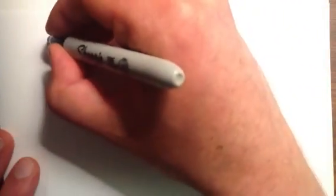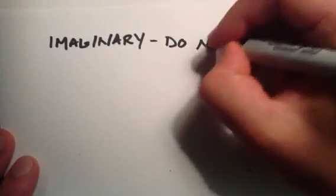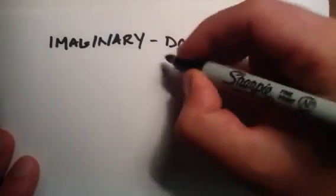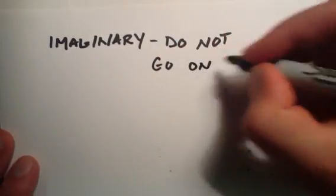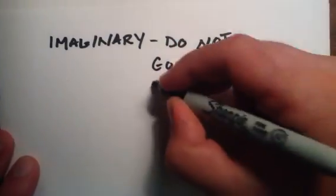So, that brings us to the last type of number. And really, all I want to say about the last type of number, that number is an imaginary number. Now, I'll go ahead and cover the imaginary numbers a little bit more in a later tutorial. But right now, all I want you to know about imaginary numbers is that they do not go on the real number line.